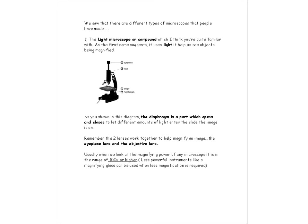So we saw there's different types of microscopes that people have made. The light microscope or compound microscope is the most common kind. We're most familiar with that type. And as the first name suggests, it uses light to help us see objects being magnified. Now as you can see in this diagram, a part called the diaphragm, this part right here, is a part which opens and closes the microscope to let different amounts of light enter the slide the image is on. Remember there's two lenses that are working together to help magnify an image. There's the eyepiece lens and there's the objective lens. Usually when we look at the magnifying power of the microscope, it's usually in the range of a hundred times or higher. Now less powerful instruments like a magnifying glass can be used when less magnification than a hundred times power is required.